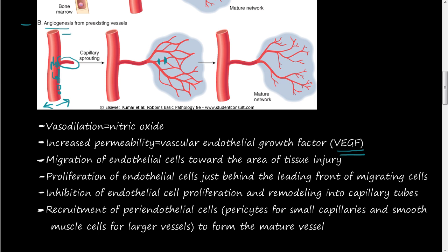That leads to the next step: migration of the endothelial cells toward the area of tissue injury. This increased vasodilation and increased permeability is similar to acute inflammation but under different molecules and controls. These endothelial cells migrate out into the tissue, and they can do that because of the vasodilation and vascular permeability.